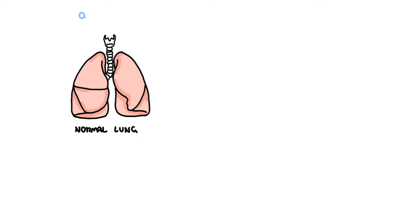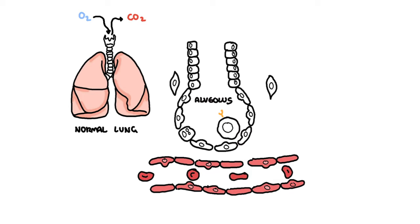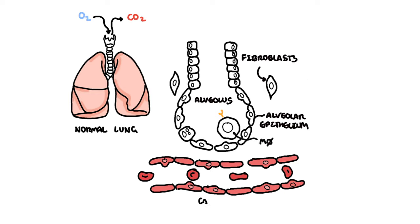Normally, our lungs allow for gas exchange — we inhale oxygen and blow out carbon dioxide. The functional units of the lungs are individual alveoli, which contain and are surrounded by many important cells, including alveolar epithelium, macrophages, and fibroblasts. Capillaries contain red blood cells, and oxygen is inhaled and enters circulation by binding to hemoglobin within red blood cells.